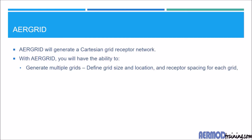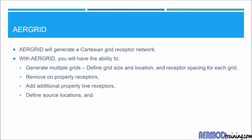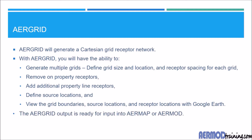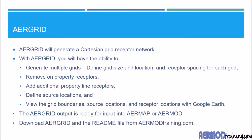With AirGrid, you'll have the ability to generate multiple grids, and for each grid you define the grid size, location, and receptor spacing. You can define the property line, which will remove on-property receptors, and you can add receptors along the property line and define source locations. You can view the grid boundaries, source locations, and receptor locations with Google Earth, and the AirGrid output is ready for direct input into AirMap or AirMod. You can download the Windows executable and readme file from airmodtraining.com.